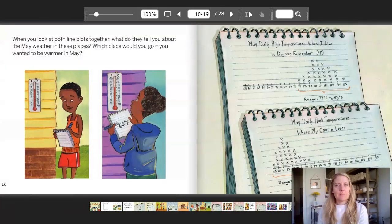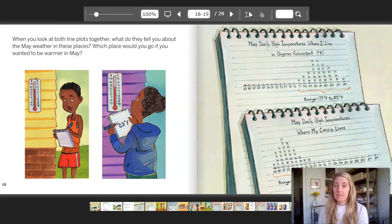When you look at both line plots together, what do they tell you about the May weather in these places? Which place would you go to if you wanted to be warmer in May? I know where I would go.